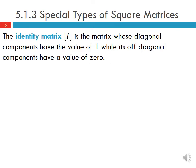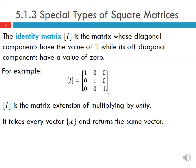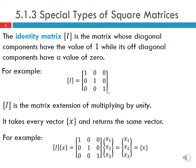The identity matrix, denoted I, has diagonal components equal to 1 and off-diagonal components equal to 0. For example, this is a 3 by 3 identity matrix — the only nonzero values are along the diagonal and they're all 1. The identity matrix is essentially the matrix extension of multiplying by 1, so I times x returns the same vector x.